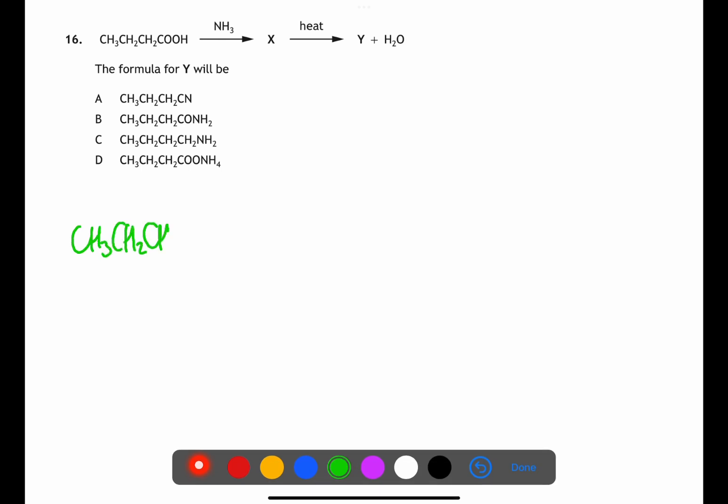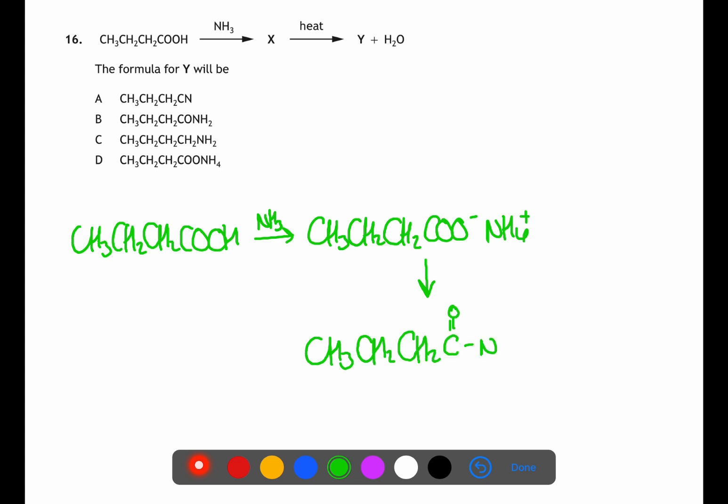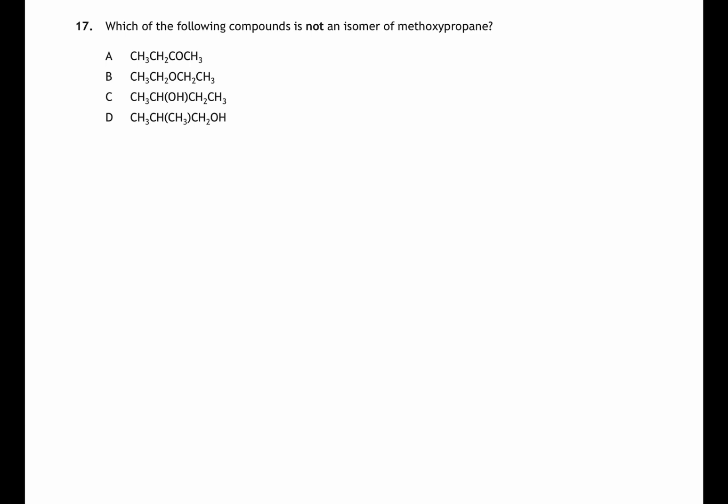Question 16 is looking at a synthetic pathway. If we take the butanoic acid which we're starting with and react it with ammonia you will have a neutralization reaction in which you produce a salt. If you then heat up this salt you will lose water and in the process you will produce an amide.